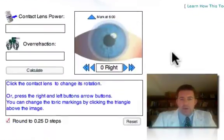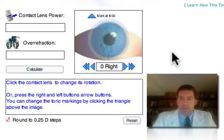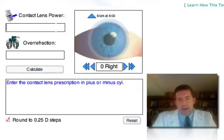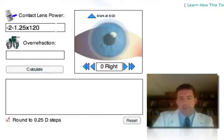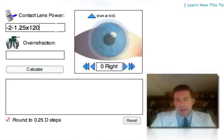And I try to make this tool about as easy as it possibly can be. The first box here is for contact lens power. So let's say we have a lens that is a minus 2, minus 1.25 axis, let's say 120. You can type the prescription in any format that you want, as long as it has a sphere power, a cylinder power with a sign. In most contexts, of course, it will be a minus cylinder power, and then an axis between 0 and 180 degrees.